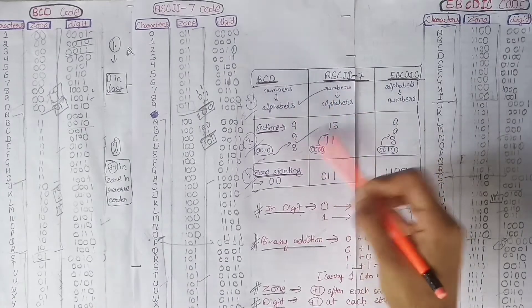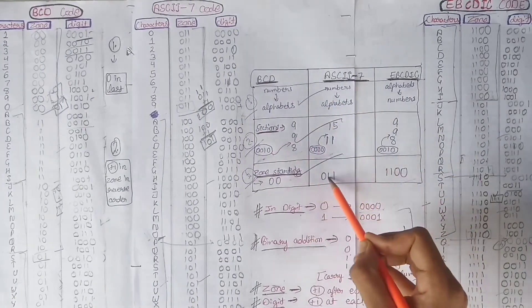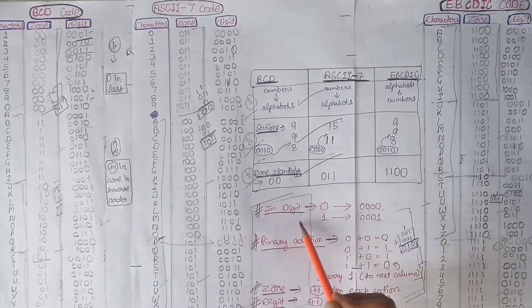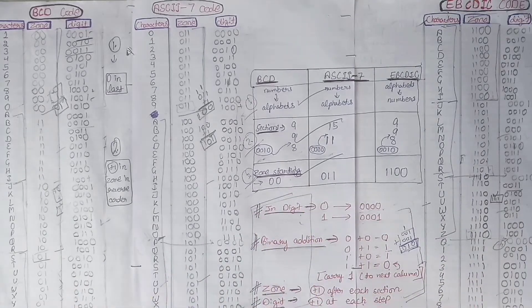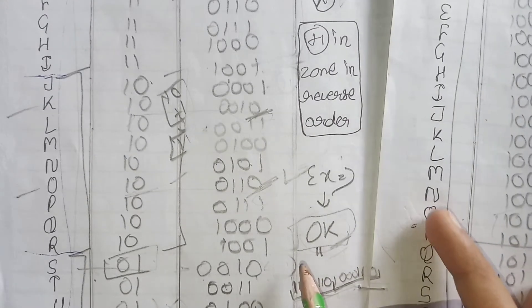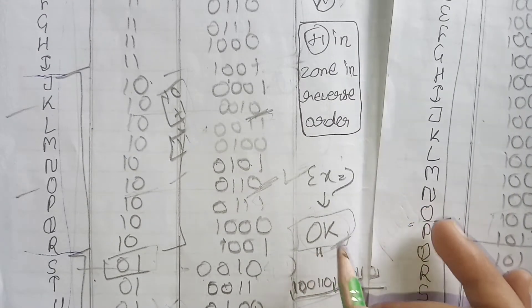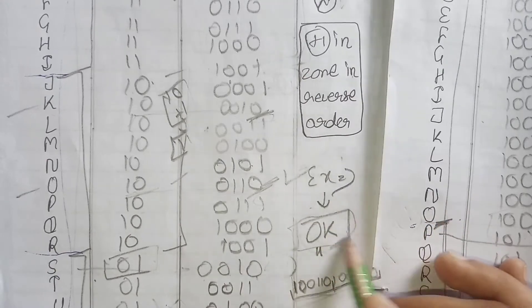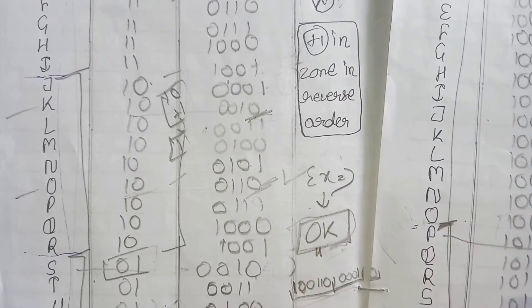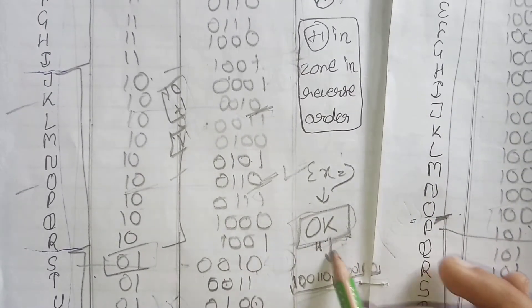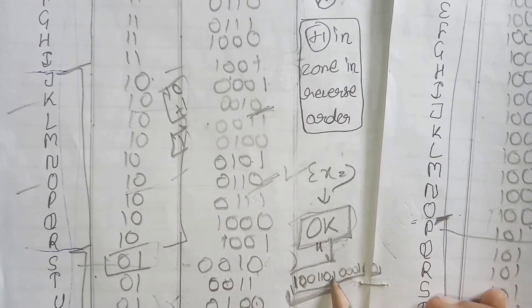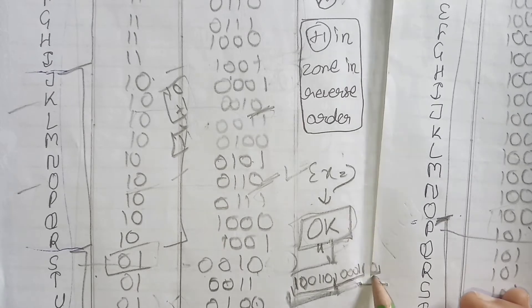Just from these three tricks and four basic rules, we have completed our BCD code, ASCII code, and EBCDIC code. Now let's see an example: we want to write the BCD code of the word OK. We have to write the BCD code of O and the BCD code of K. The BCD code of O is found in the table, and in front of O we have 1, 0, 0, 1, 1, 0.